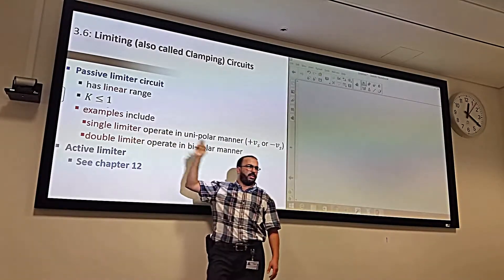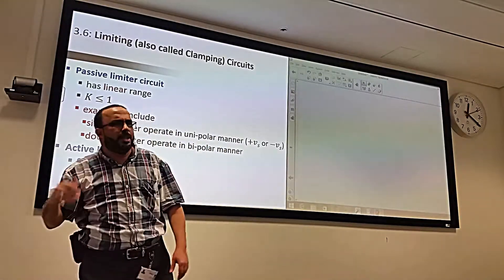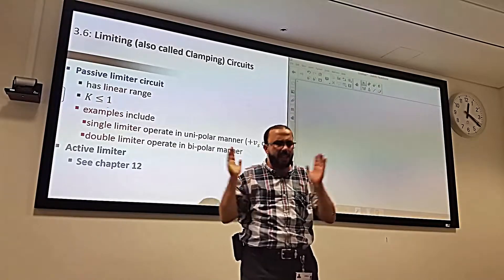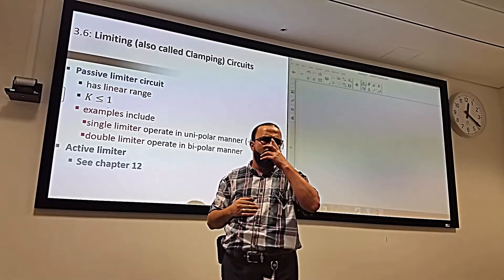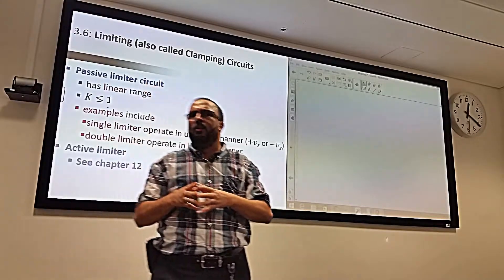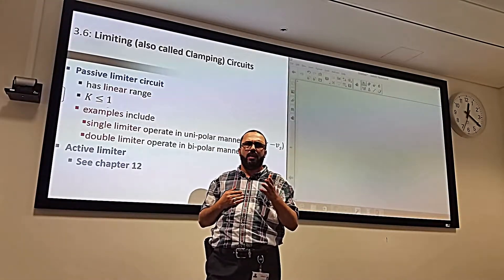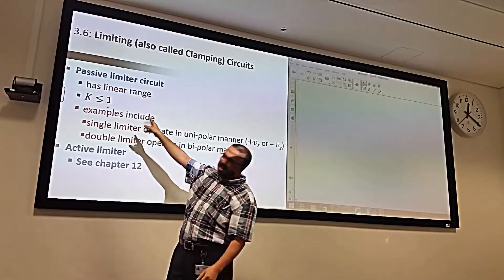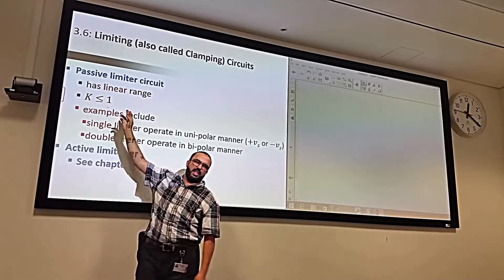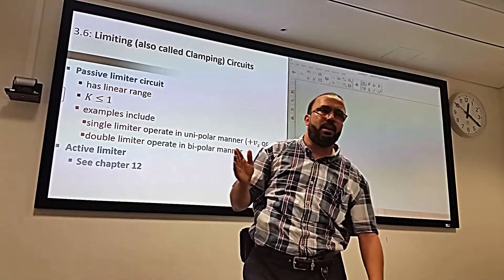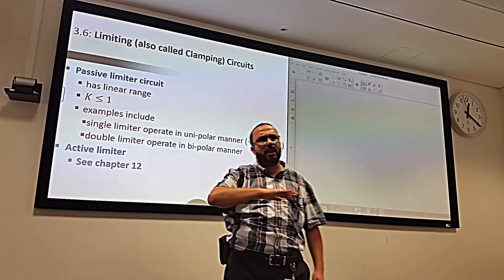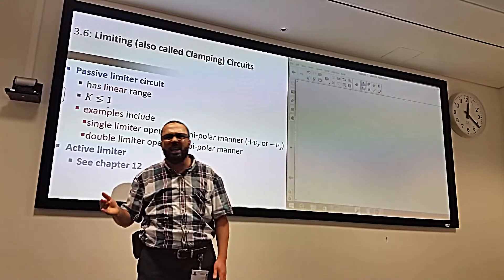In the double limiter, the limiter has both a positive limit and a negative limit, as well as a linear region. There's also a student question about whether K needs to equal 1 for linearity — the answer is no, K just needs to be constant. It can be plus one, minus one, or any value. The only requirement is that K is constant so we have a slope.